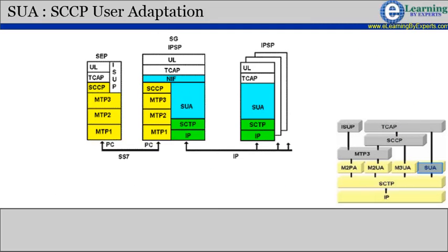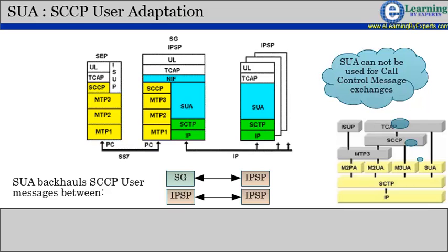The signaling connection control part user adaptation layer (SUA) protocol details the delivery of SCCP user messages — MAP and CAP over TCAP, RANAP, etc. — and new third-generation network protocol messages over IP between two signaling endpoints. Consideration is given for transport from an SS7 signaling gateway to an IP signaling node, such as an IP-resident database. This protocol can also support transport of SCCP user messages between two endpoints wholly contained within an IP network.